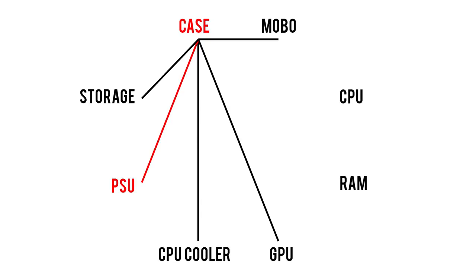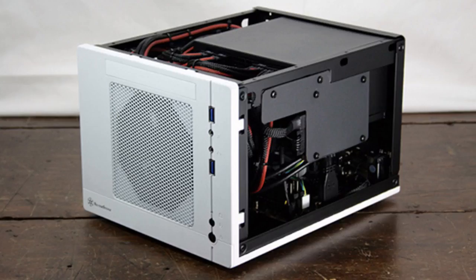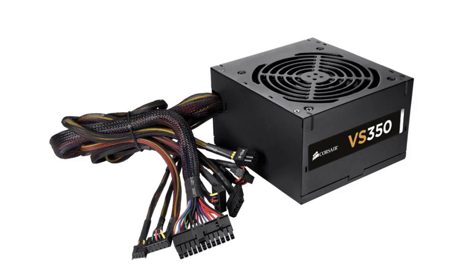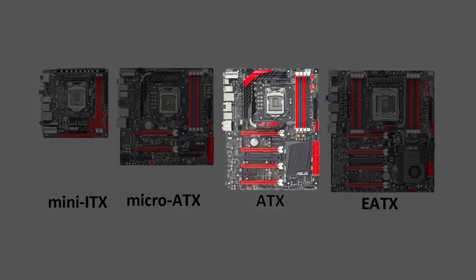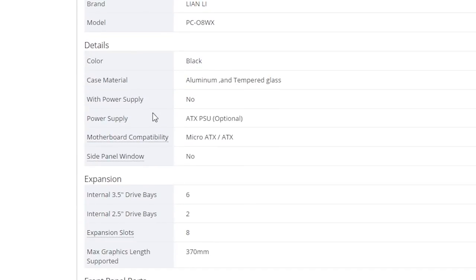To guarantee a case's compatibility with a power supply, there are three factors to consider. The first one being form factor. Like motherboards, power supplies come in a variety of sizes too, but the two main types are ATX and SFX. SFX is typically only used in small form factor cases, so unless you're building a super portable PC, chances are you'll be dealing with an ATX power supply. This is kind of confusing since ATX is also a motherboard form factor, but since they signify different specifications, it's probably best to ignore the similarity. Check both product pages to make sure the form factor of your power supply is supported by your case.